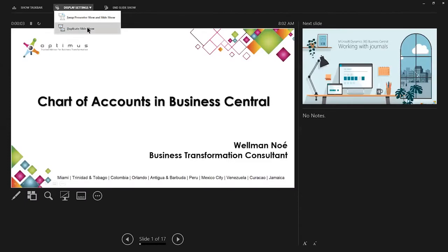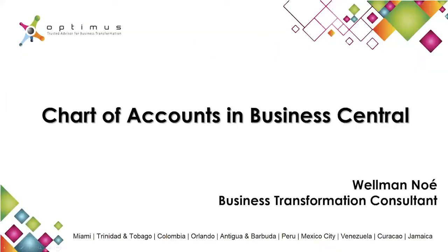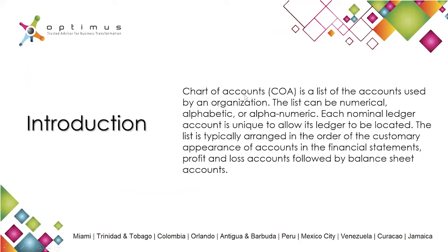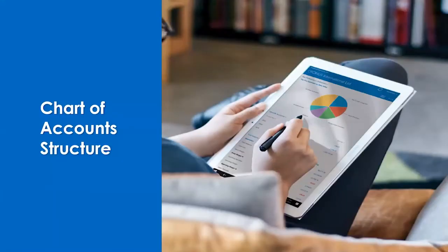Part of the regular setups that we need to do within Business Central will of course be all finance related. Since we have this first module, one of the most important tasks is to understand how we operate with the chart of accounts and how we set it up to use it properly. Basically, the COA or chart of accounts is just the list of accounts used in your organization, and this list can be numerical, alphabetical, or alphanumeric. Each nominal ledger account is unique to allow its ledgers to be located.